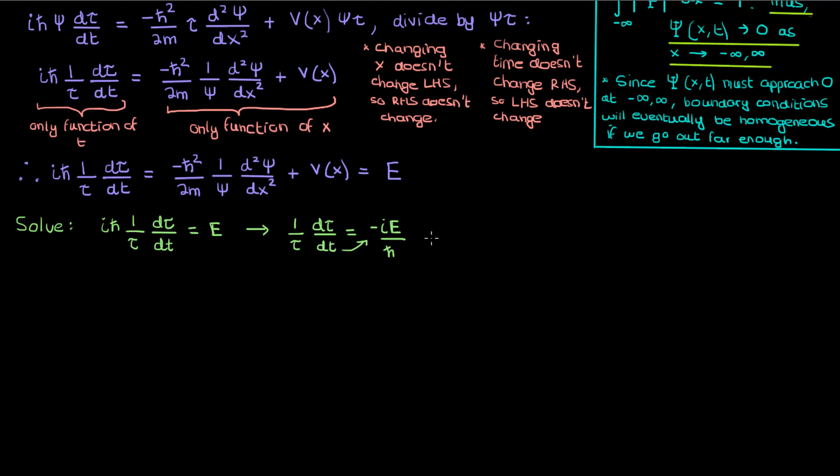You can quite easily solve this equation by moving dt to the right and integrating both sides. On the left we'll end up with the natural log of the absolute value of tau and on the right we'll end up with negative i E over h bar times t plus an integration constant c.